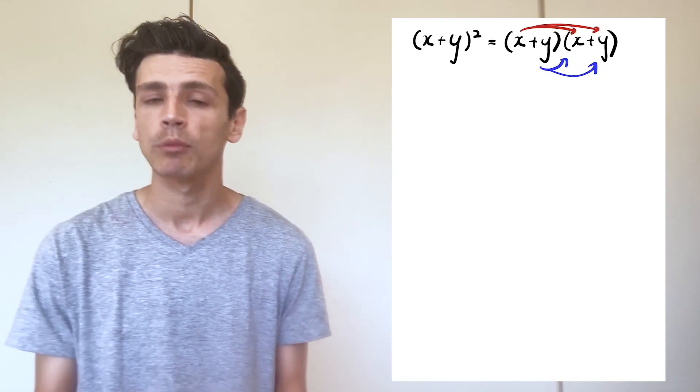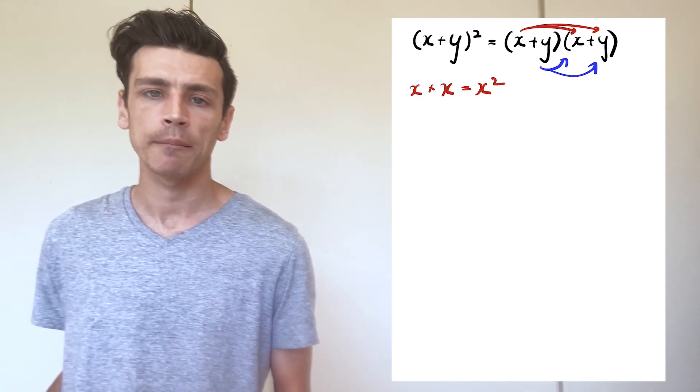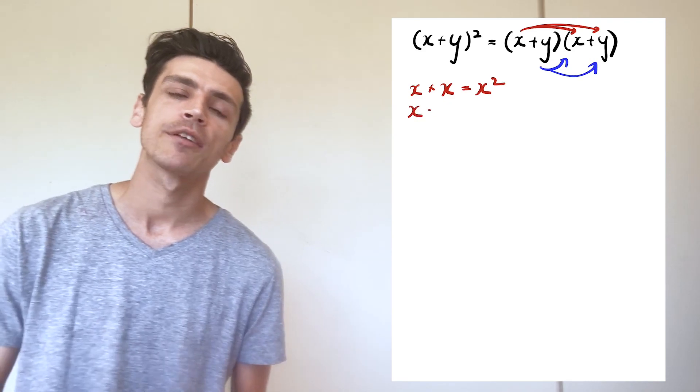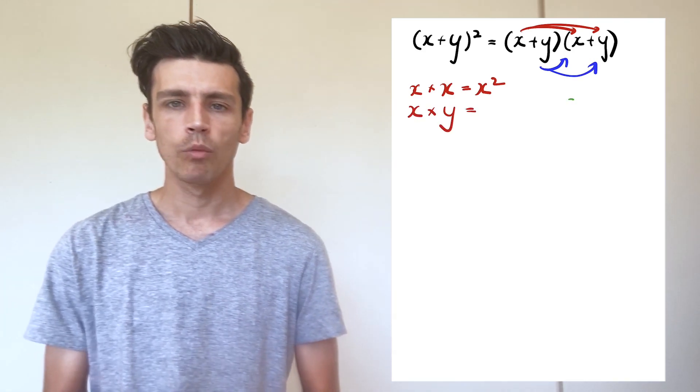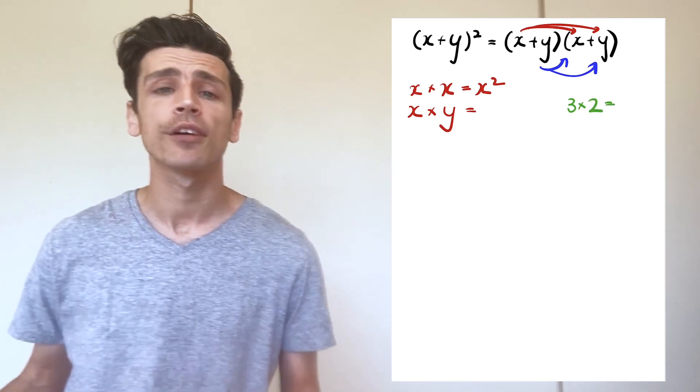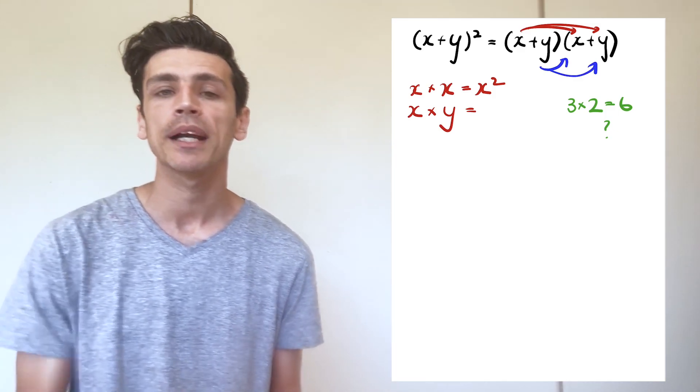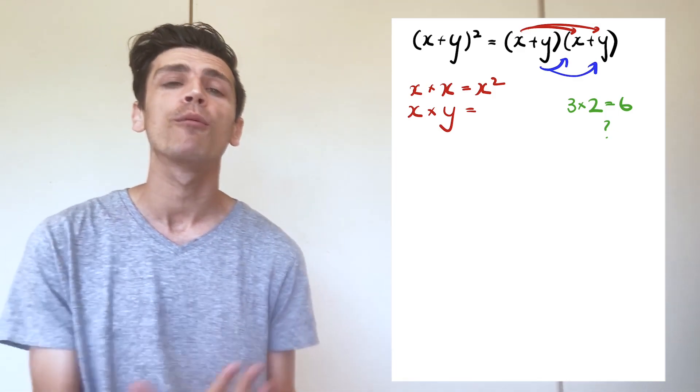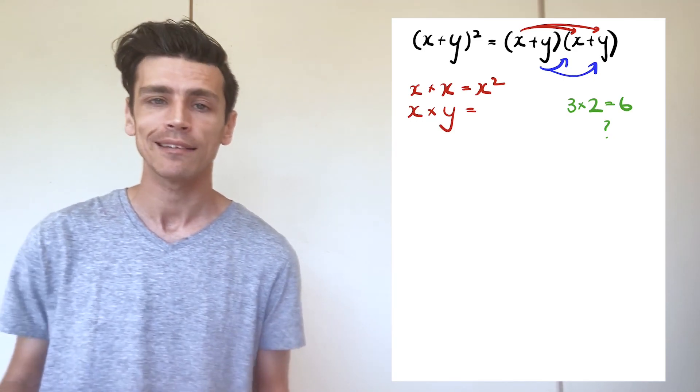We work it out the exact same way as we did our previous one. So x multiplied by x - we've done this before - x multiplied by x gives me x squared. Now we're going to do x multiplied by positive y. Well, if it was 3 and 2 for example, we just go 3 multiplied by 2 would give me 6. But we don't know what these numbers could be - these could be 3 and 2, but they could be completely different numbers.